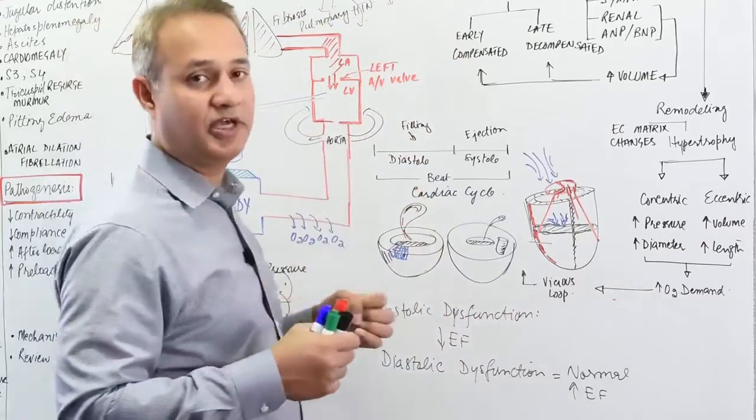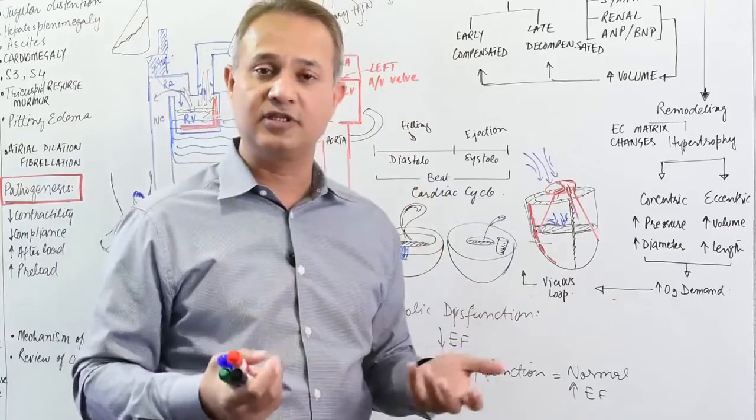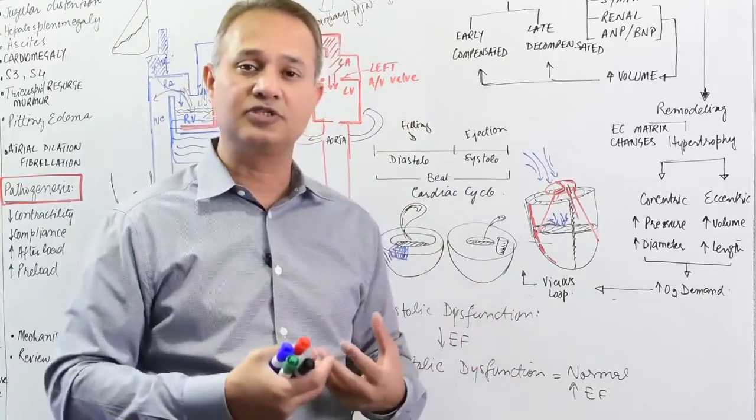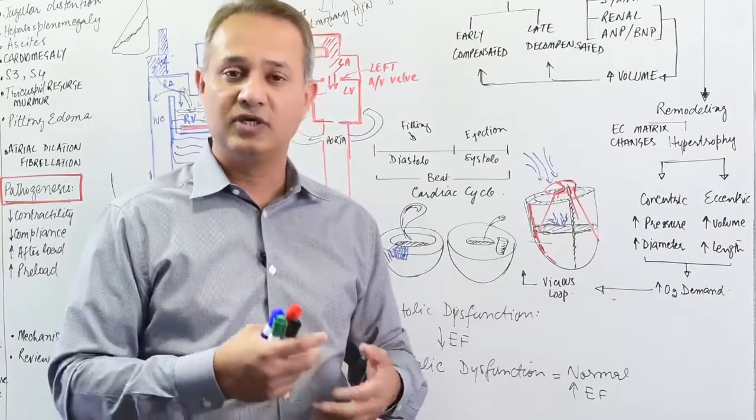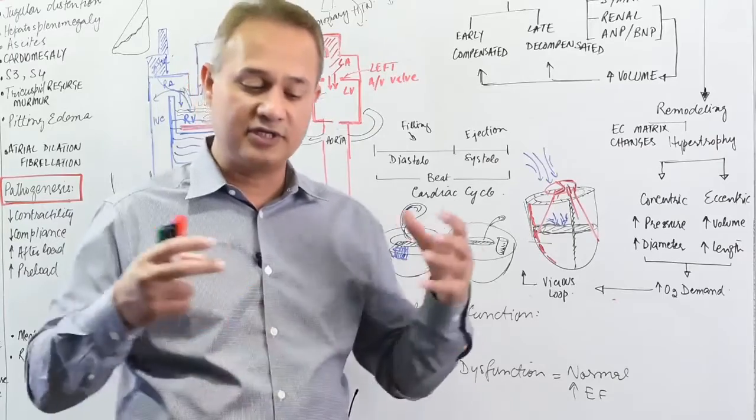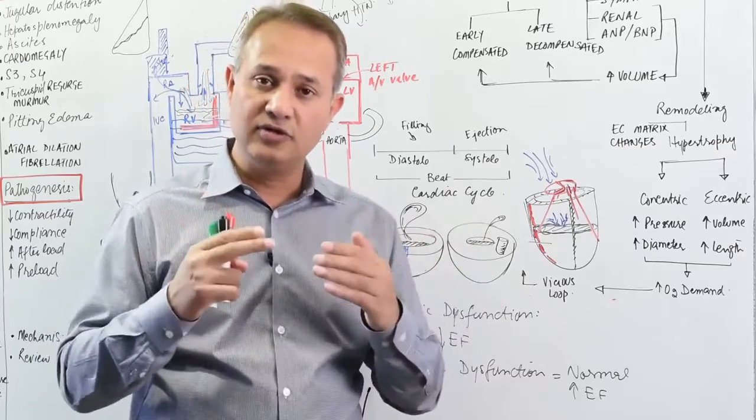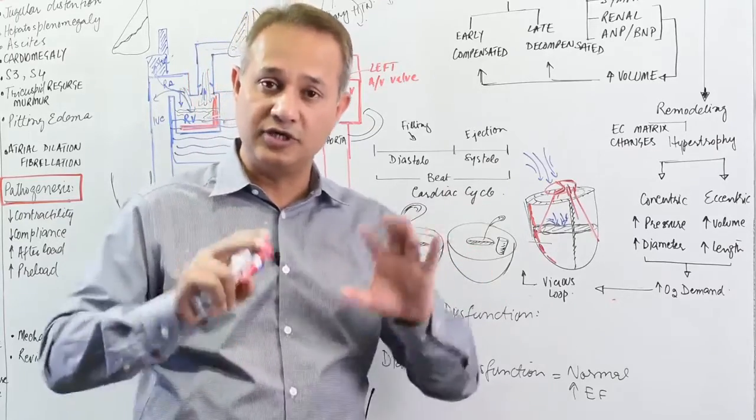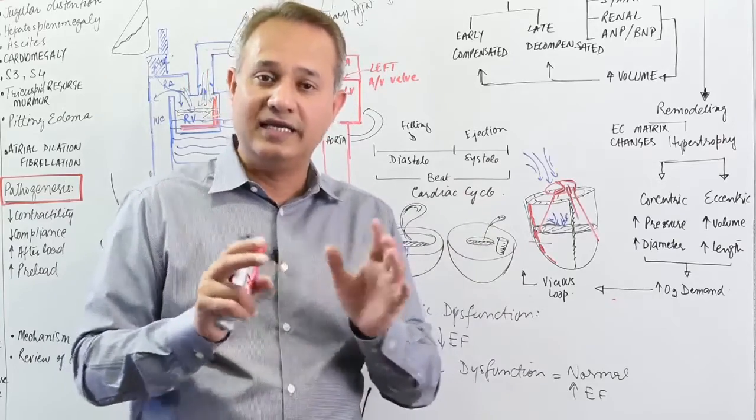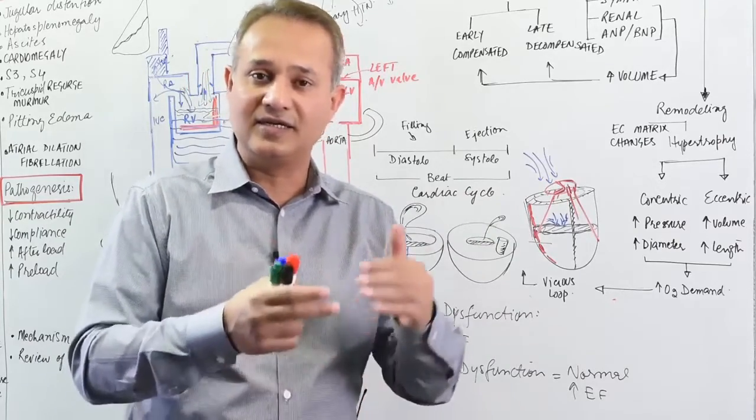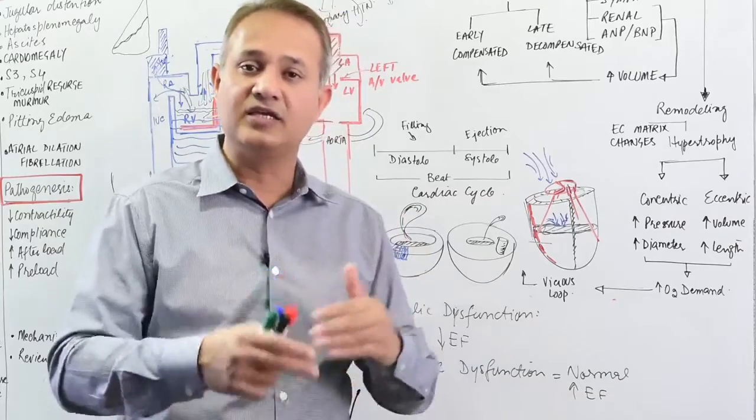What do ANP and BNP do? They work on the vascular and renal systems. If there's stretch, they excrete water to reduce the load. But if there's less stretch, their reduction means increased load.